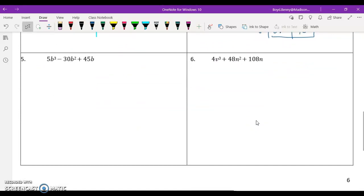Let's jump on down here to number 5. I can see that each of these are divisible by 5, but I also see I've got b to the third, b to the second, and b. So I always pick the variable with the smallest exponent. Let's see what we have in the parentheses after we factor out 5b. That would leave me with b squared minus 6b plus 9.